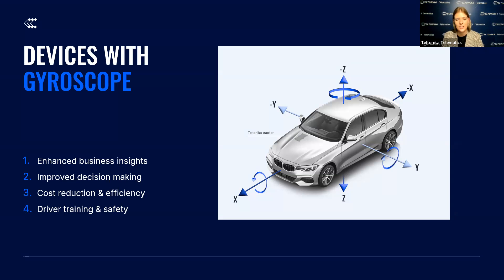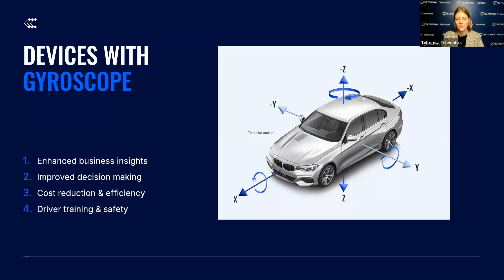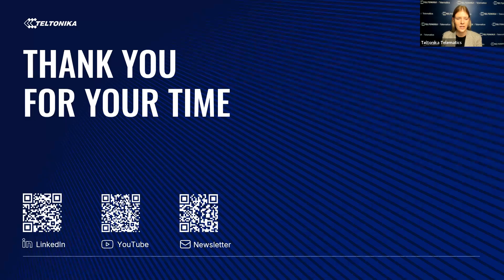Improved decision making: with detailed tracking data from gyroscopes, you can gain a clear understanding of vehicle behavior, allowing more accurate decisions related to fleet management, resource allocation, and operational adjustments. Cost reduction and efficiency: by using insights from gyroscope data, you can optimize routes, reduce operational costs, and increase efficiency across your fleet. Driver training and safety: with detailed driver behavior analysis, you can implement targeted training programs based on real data, promoting safer and more efficient driving practices. Choosing devices with gyroscopic features gives your business a competitive edge with deeper insights and greater control over fleet management.